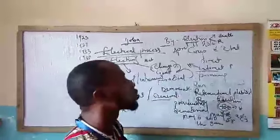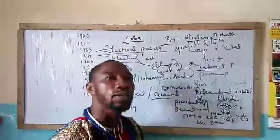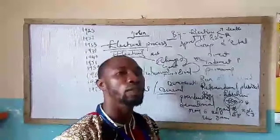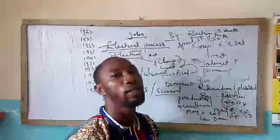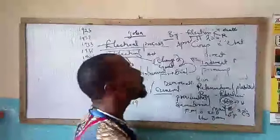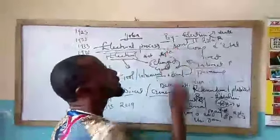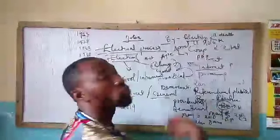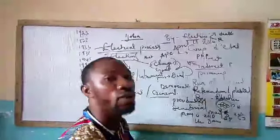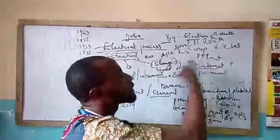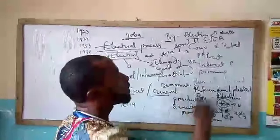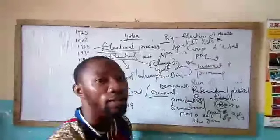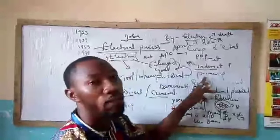The next type of election is primary election. Primary election is a type of election conducted within a political party. So if APC is conducting its primary election, it will not affect PDP or APGA. That is the example of what is referred to as primary election, and it is also an example of indirect election.